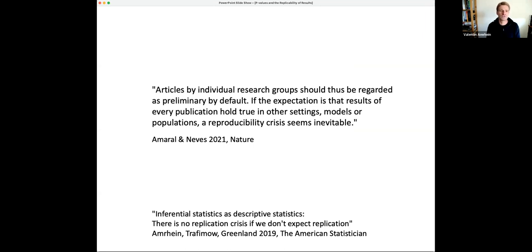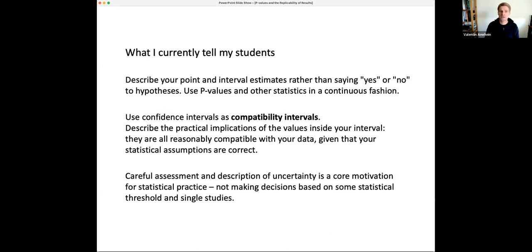And second last slide here. Articles by individual research groups should be regarded as preliminary by default. And then comes a sentence that I find remarkable. And it basically says the same thing that we wrote in the title of a paper, and maybe this was more provocative here. There is no replication if we don't expect replication. I really think that most of the things that are in the press, that science is unreliable, is a communication issue. It's not so much a methods issue, but the underlying problem is that we tend to oversell results from single studies because we think we can make those bright line decisions based on whatever statistic. And in most cases nowadays it's the p-value.